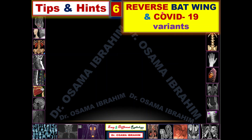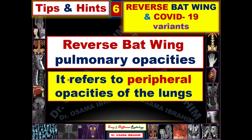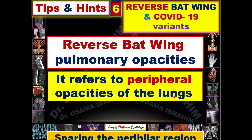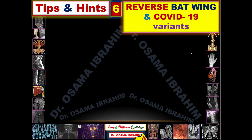In my presentation today, I will talk about the reverse batwing opacity. When you are presented with this reverse batwing opacity in the frontal chest radiograph or even in the CT examination — peripheral consolidation, subpleural location — this requires a differential diagnosis. The definition of reverse batwing pulmonary opacities refers to peripheral opacities of the lungs sparing the perihilar region. If you see this appearance in the frontal chest radiograph or in the high-resolution CT chest, you can describe it as a reverse batwing.